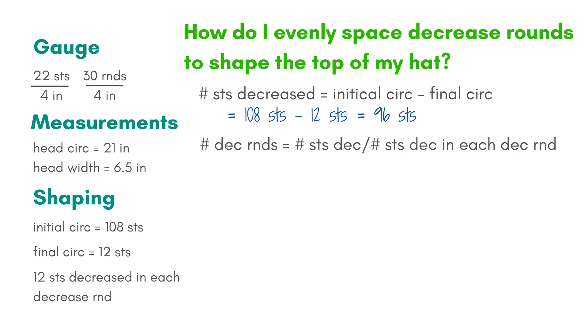Let's figure out how many decrease rounds to work. That's just the number of stitches decreased, we just figured that out, divided by the number of stitches decreased in each round. 96 stitches divided by the 12 stitches decreased in each decrease round means I'll need to work 8 decrease rounds.